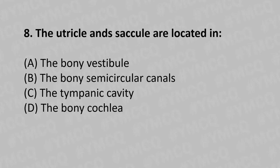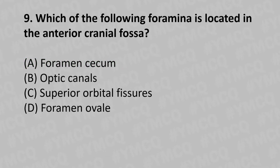The answer is Option A: bony vestibule. Moving to our ninth question: which of the following foramina is located in the anterior cranial fossa? Option A: foramen cecum. Option B: optic canal. Option C: superior orbital fissure. Option D: foramen ovale. The answer is Option A: foramen cecum.